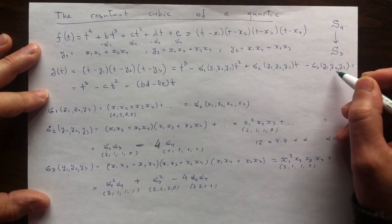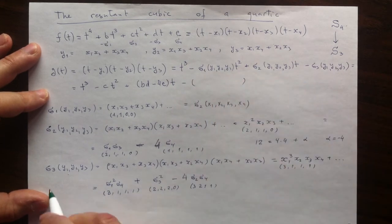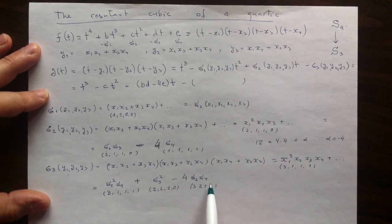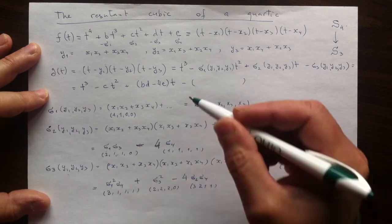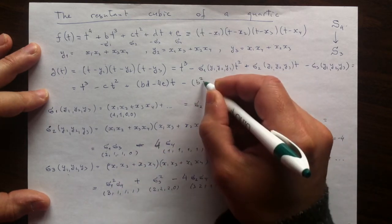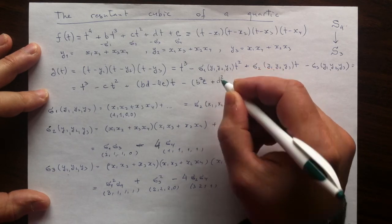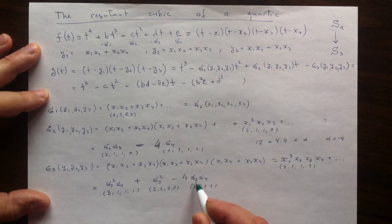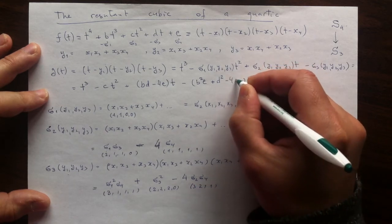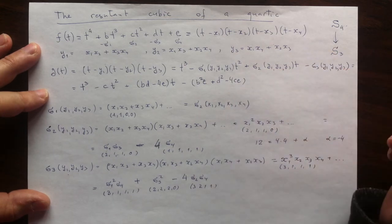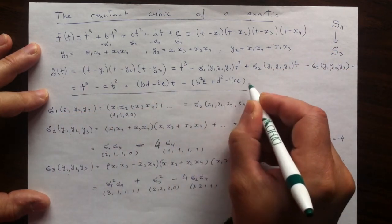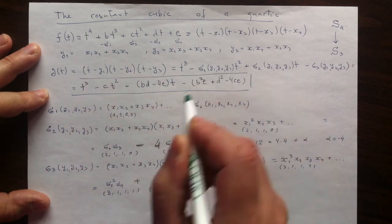Now the free term, which is the σ3, which is this combination of elementary symmetric functions of x's. σ1 is negative b, σ1 squared is b squared, σ4 is e. σ3 is negative d squared, it is just d squared. And then with negative 4, σ2 which happens to be c, and σ4 e, so negative 4ce. That is the coefficient for the free term. That is the answer, the formula for the resolvent cubic.